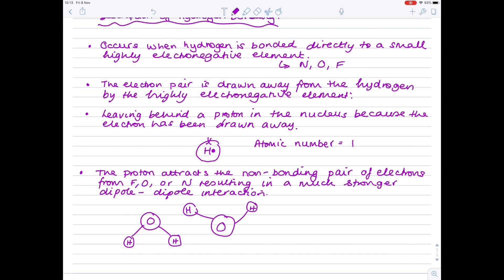I'm going to show you a picture to represent water's hydrogen bonding. The oxygen has drawn away the electrons from hydrogen, so it becomes slightly negative — because electrons are negatively charged. That hydrogen is now deficient in electrons, so it's slightly positive. Therefore, hydrogen bonding forms because opposites attract: the slightly positive hydrogen is attracted to the slightly negative oxygen.